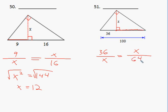And so we get x squared equals 36 times 64, which is 2,304. Taking the square root of that.